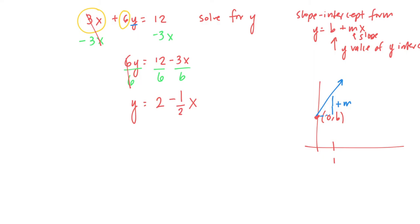And so now our equation is in the same form as this other equation that gives us the slope and the y-intercept. And so we want to find the slope. The slope is the number that's with x, and so the number that's with x is negative 1 half. So the slope, or the m value, is equal to negative 1 half. That just means that every time x goes over by 1, we subtract 1 half.